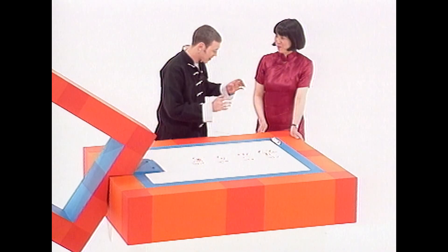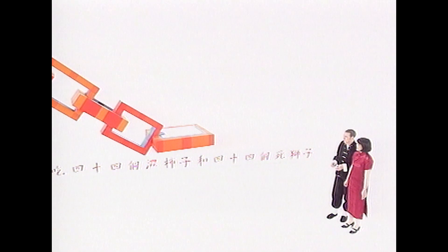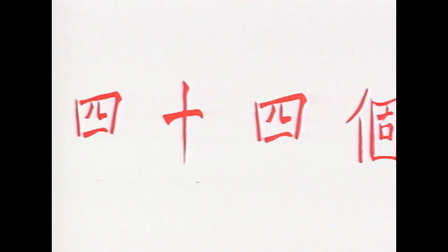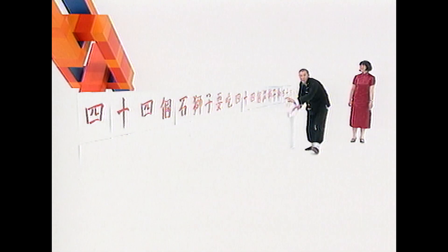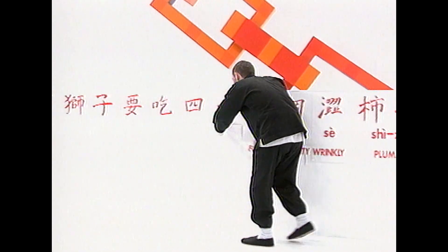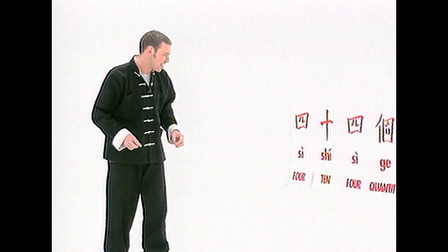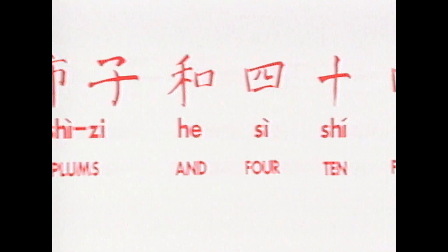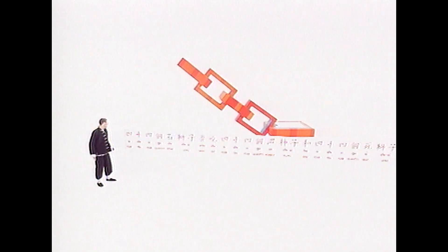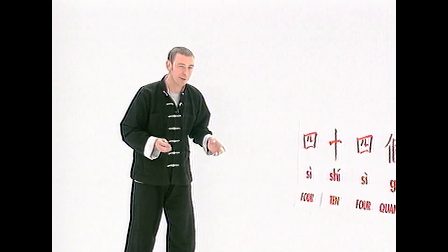Very good. Now I'm going to attempt a Chinese tongue twister of 26 characters long. Can you read that for me? Underneath here, not only is there a translation into English, there's also phonetic guidelines, so I can actually read it and take a good guess at how to pronounce it. What it actually says is: four ten four-quantity stone lions want to eat four ten four-quantity wrinkly plums and four ten four-quantity dead lions. Xiao Zhang, can you read the first three for me, please? 四十四.